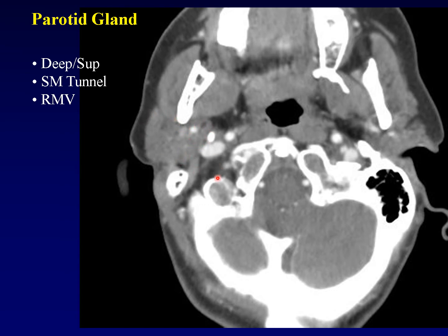Another important anatomic feature is the stylomandibular tunnel. Going from the styloid process to the edge of the mandible, that gap is the stylomandibular tunnel. The deep lobe of the parotid knuckles through that tunnel — it's an important reference point, and it is useful to confirm that the gland is not enlarged in that location.